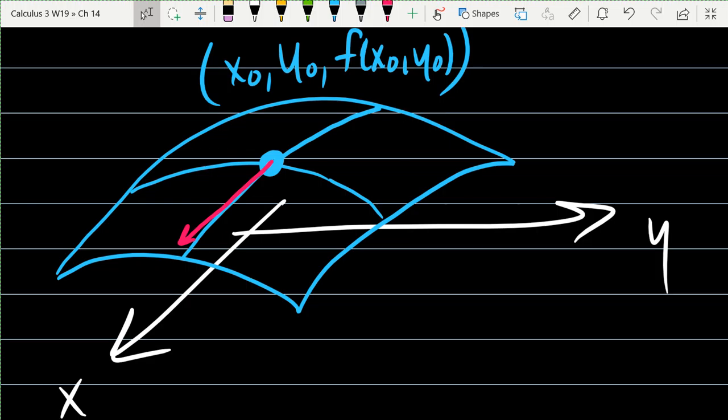So back when we were doing functions that had one dimension input, one dimension output, we're always going to the right. Now the problem is there's not just one axis we can go along. We can go along the x-axis. We can also go along the y-axis.